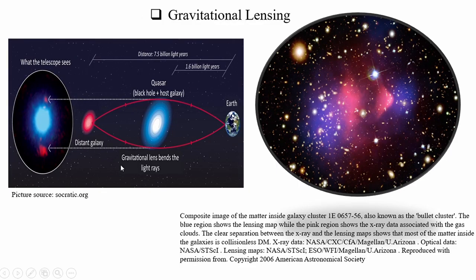The second example is gravitational lensing. You may have studied lensing with convex or concave lenses, but there is another kind called gravitational lensing. If you have a very massive star or galaxy, it actually bends light when light rays pass through that region. As Einstein predicted, our universe has four dimensions - three of space and one of time - called spacetime. Gravitation is nothing but a manifestation of spacetime curvature.